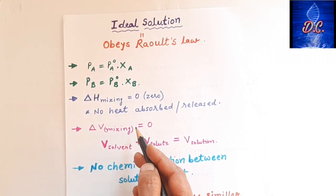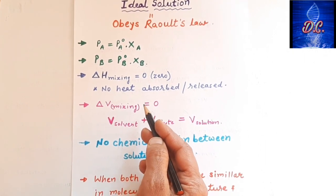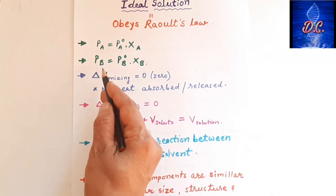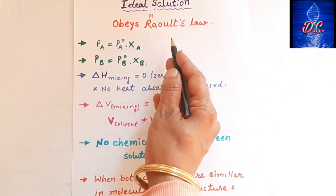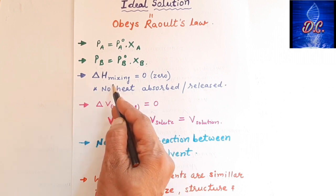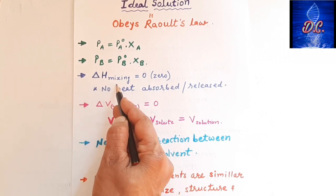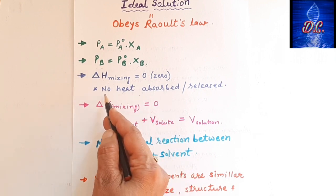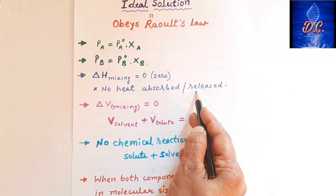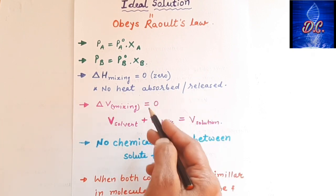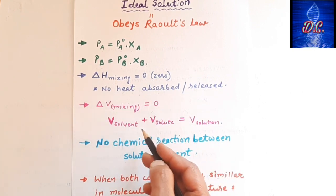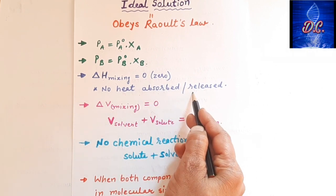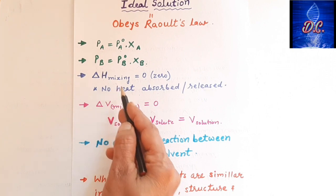The next property is ΔH_mix — the enthalpy change on mixing — is equal to zero. This means there is no enthalpy change, meaning no heat is absorbed or released during the preparation or mixing of A and B components. When we make the solution, no heat is absorbed or released, so there is no enthalpy change.